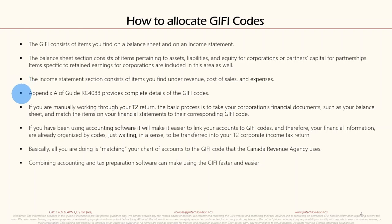Appendix A of guide RC4088 provides complete details of the GIFI codes. If you are manually working through your T2 return, the basic process is to take your corporation's financial documents such as your balance sheet and match the items on your financial statements to the corresponding GIFI code. If you have been using accounting software, it will make it easier to link your accounts to GIFI codes — your financial information is already organized by codes, ready to be transferred into your T2 corporate income tax return.